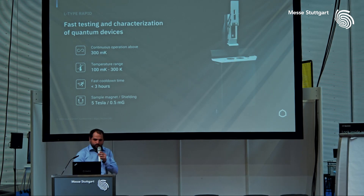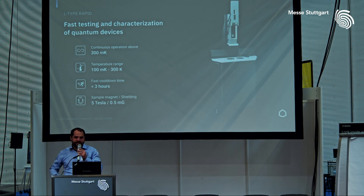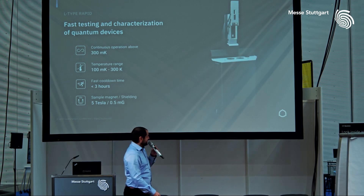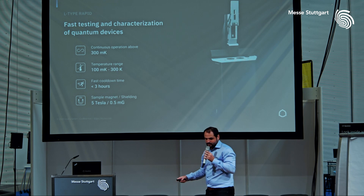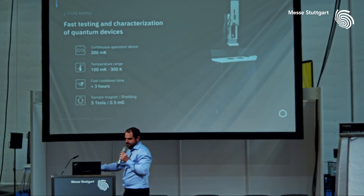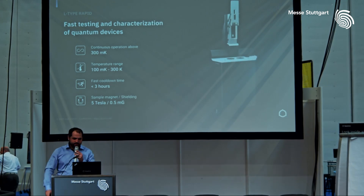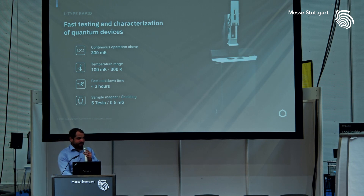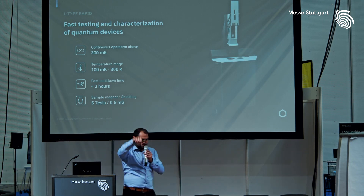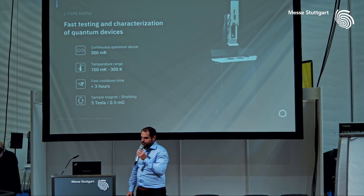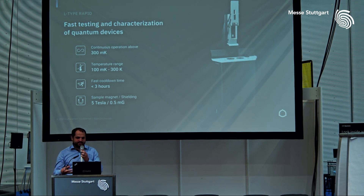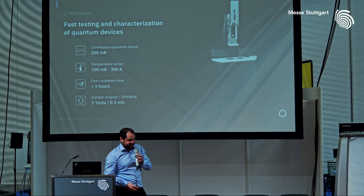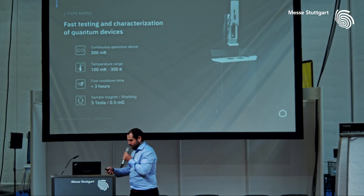We put all these technologies together in the L-Type Rapid Cryostat. This system can run from 100 millikelvin all the way to room temperature. It features the fast sample loader, and we also have a demonstrator of how the sample loader works at our booth. All of this makes the L-Type Rapid a unique cryostat for fast testing and characterization of material samples and quantum devices.